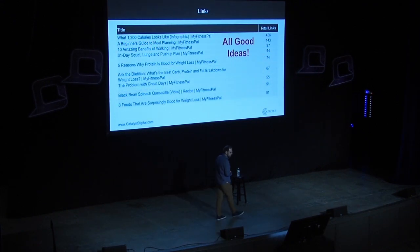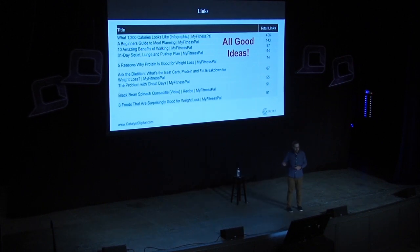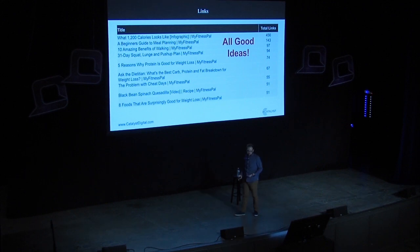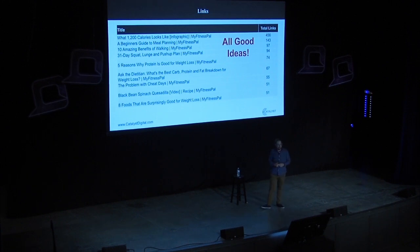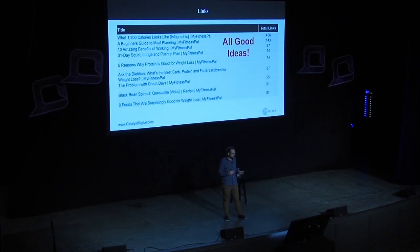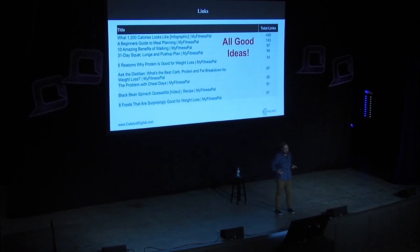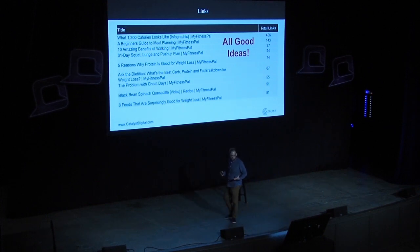A very traditional source of information for SEOs that sometimes gets forgotten: stick a competitor into a backlink checker and see what their best content is in terms of links. This is content that really resonated with people enough that they wanted to link to it, and links mean ranks. I put in MyFitnessPal — their top blog posts by links were an infographic on what 1,200 calories looks like, meal planning at number two, and benefits of walking at number three. All great source ideas for a healthy eating blog.